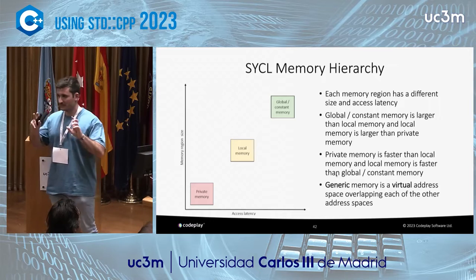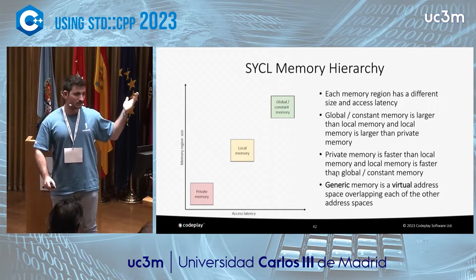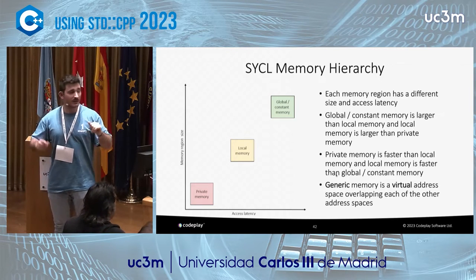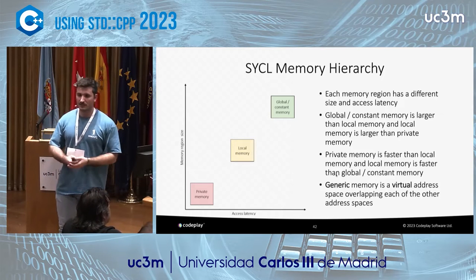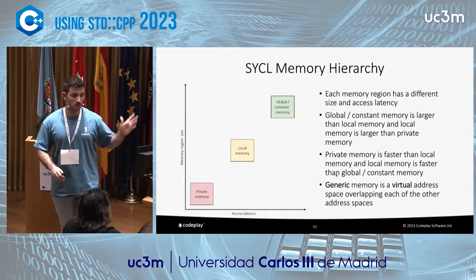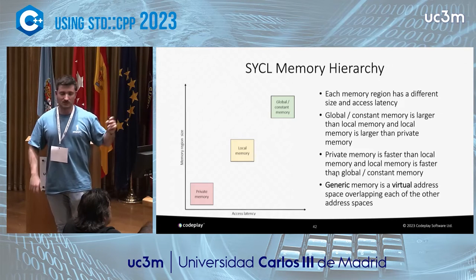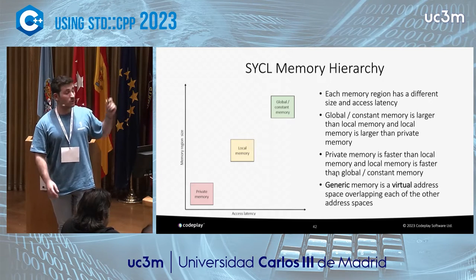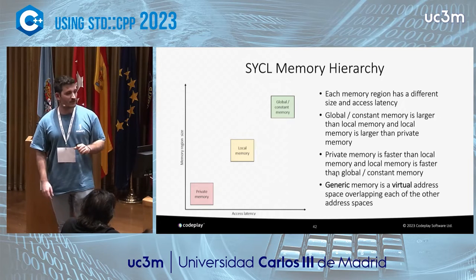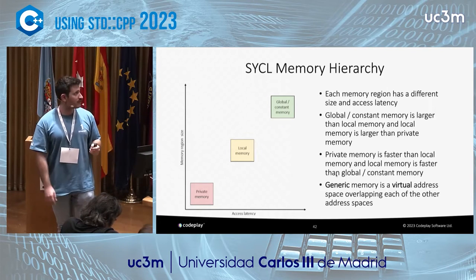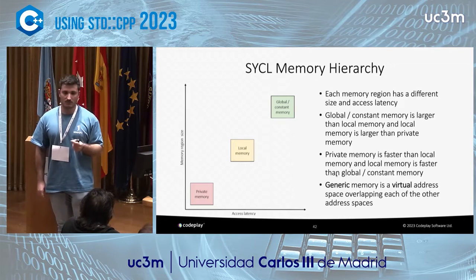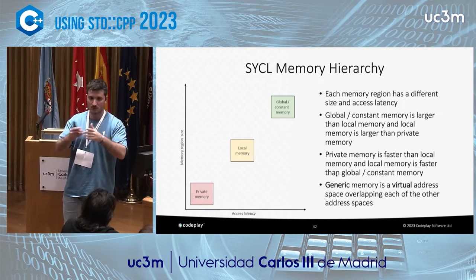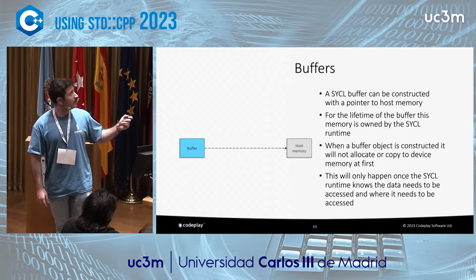This is somewhat implementation-defined. It's true that private memory may be smaller, local memory a bit bigger, and global memory the largest. You might also say private memory is fastest and global memory slowest, but you always have to test for performance. On top of this, if you don't want to handle all of this yourself, SYCL introduces the generic address space — a virtual address space overlapping the three other address spaces.